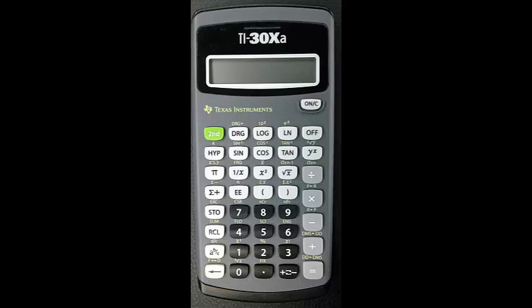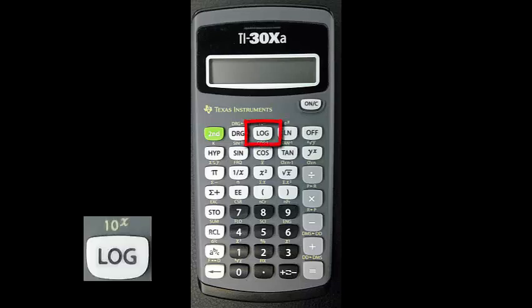The button you will use for the common logarithm is the log button. The inverse logarithm, or antilogarithm, is accessed using the second function button along with the log button. The inverse function is labeled 10 to the X.